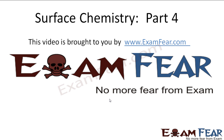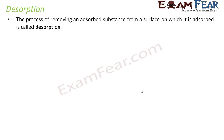Hello friends, this video on surface chemistry part 4 is brought to you by examphia.com. Now let's talk about desorption. Desorption is nothing but the process of removing the adsorbed substance from the surface. This is the desorption process used to remove the adsorbed substance from the surface on which it is adsorbed.